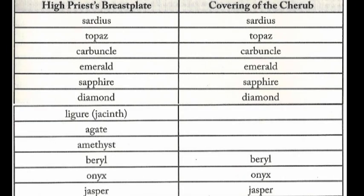Notice the chart on your screen comparing the high priest's breastplate to the covering of the cherub. They both had the sardius, topaz, carbuncle, emerald, sapphire, and diamond. The three stones the archangel didn't have were the ligure or jacinth, the agate, and the amethyst. Then both the high priest and the anointed cherub had the beryl, the onyx, and the jasper.